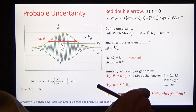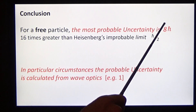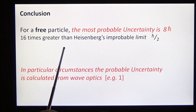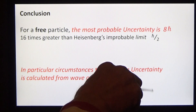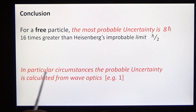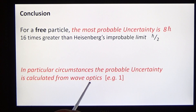To sum up: for a free particle, the most probable uncertainty is 8h, and this is 16 times greater than Heisenberg's improbable limit. Meanwhile, in particular circumstances, the probable uncertainty can be accurately calculated from wave optics — we don't have to guess it. Thank you.